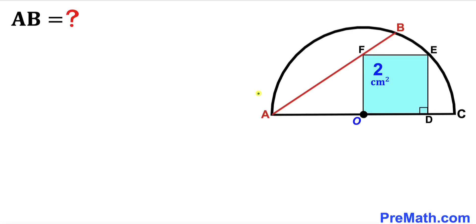Welcome to pre-math. In this video we have a chord AB of a quarter circle, such that a blue square ODEF is fully confined between them. The area of this blue square is 2 cm², and our task is to calculate the length of chord AB.